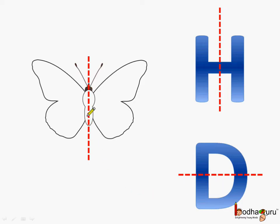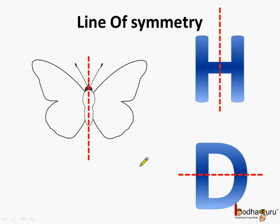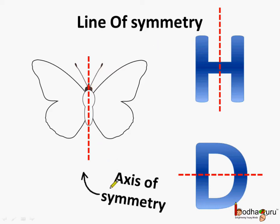You know, the line — which could be anything: horizontal, vertical, or any angle — which divides any figure into two identical halves is called the line of symmetry. So a symmetric figure always has a line of symmetry. It is also called the axis of symmetry.